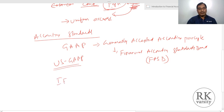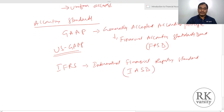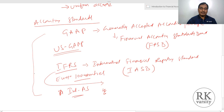At an international level, we have IFRS — International Financial Reporting Standards — provided by the International Accounting Standards Board. Near about all European countries and more than 100 countries in the world follow IFRS. When it comes to India, we have IND-AS — Indian Accounting Standards — which is prepared in consultation with IFRS as well as the Institute of Chartered Accountants of India. So these three are the major standards: US GAAP for the US, IFRS worldwide, and Indian Accounting Standards for India.